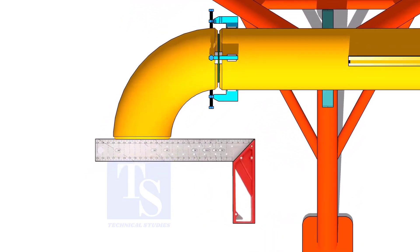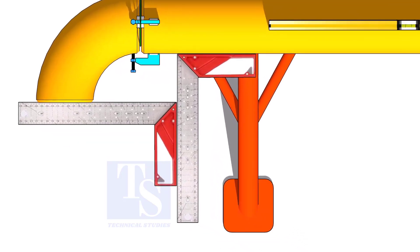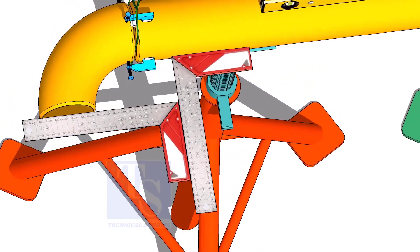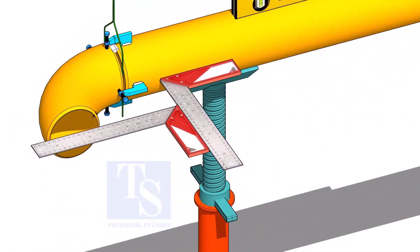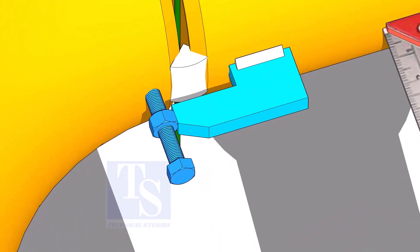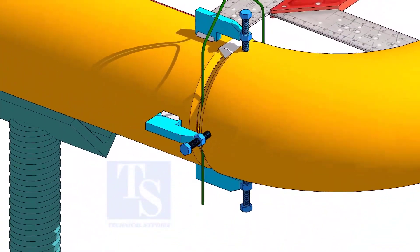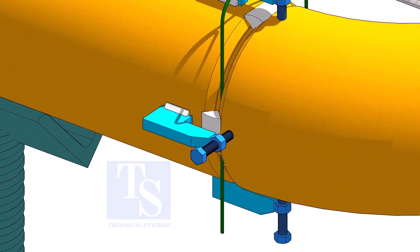Correct the squareness of the elbow using right angles as shown. Tack weld at both sides of the joints.